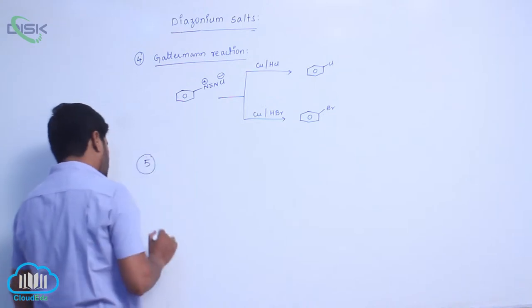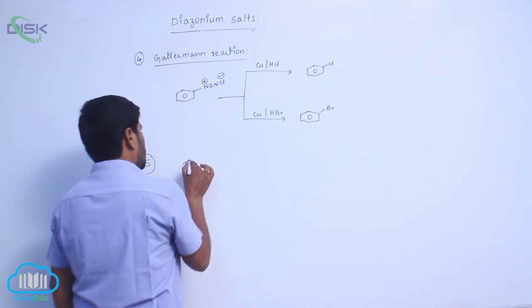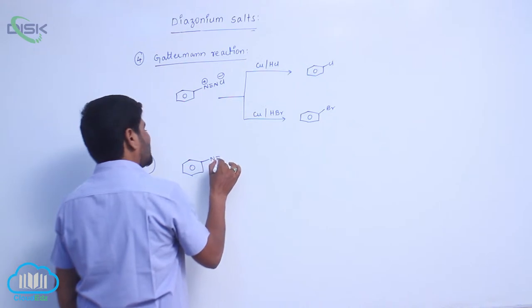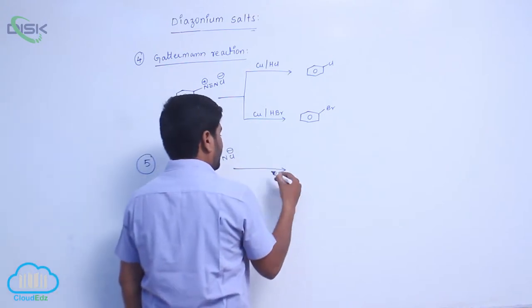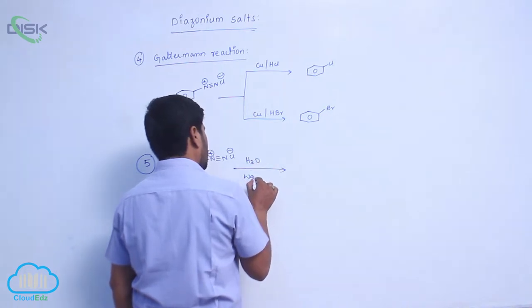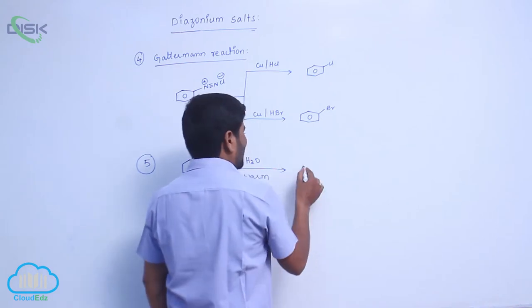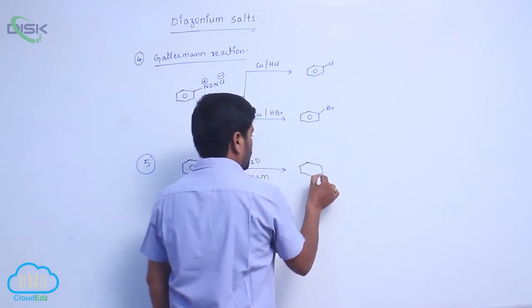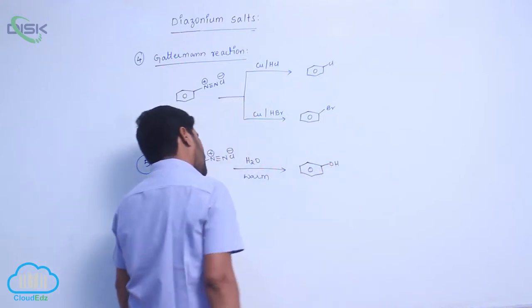Fifth one is when benzene diazonium chloride undergoes hydrolysis with warm water, approximately 50 degrees centigrade, to form phenol.